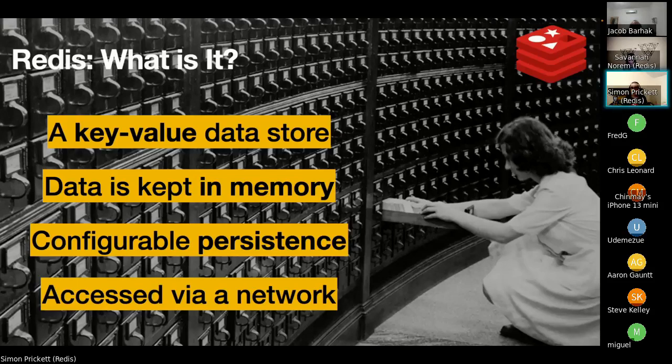So what is Redis? You may have heard of it — you may be using it whether you know it or not. You've almost certainly interacted with something on the internet that uses it. It's an immensely popular open source project, and it's often used as a cache. What we're here to talk about is using it for many other things, because it's actually a general purpose database. The reason people love it is because it keeps a copy of all data in memory, so reads are very, very fast.